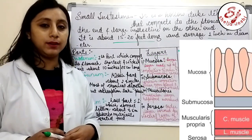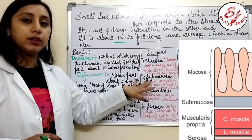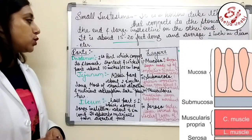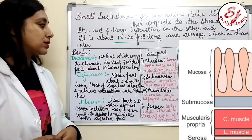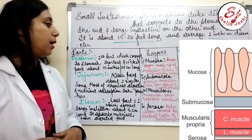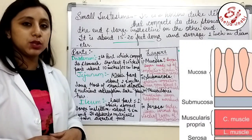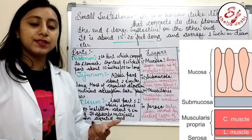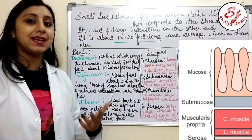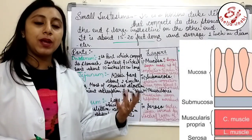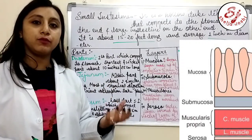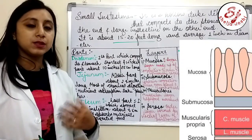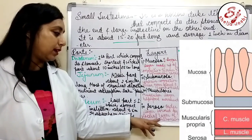There are 4 layers of the small intestine. The first is the mucosa, the innermost layer made up of connective tissue and a muscular layer. The second is the submucosa, which contains connective tissues, nerves, blood supply, and lymph vessels. The third is the muscularis, a muscular layer that helps in food movement. The fourth is the serosa, the outermost layer formed by the visceral layer of the peritoneum.